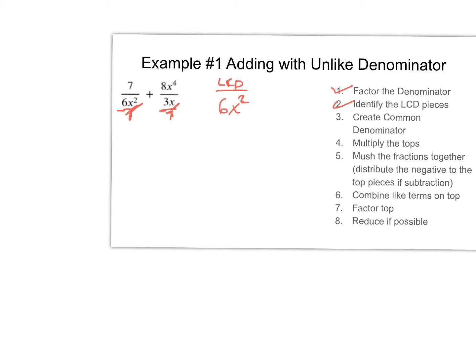My common denominator is six x squared. Now the next step is to create the common denominator. Looking at the first fraction, I already have six x squared, so I'm all set. For the second fraction, I'm at three x and I need six x squared, so I have to multiply by two x — because three x times two x is six x squared. That's creating the common denominator, making both denominators the same.